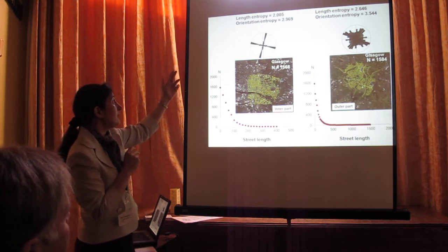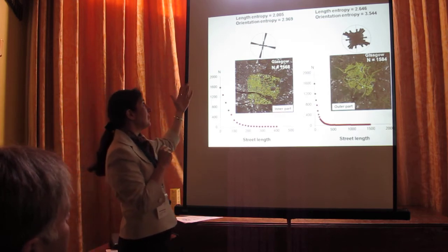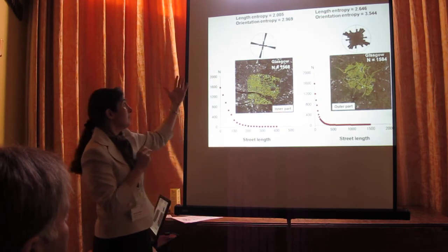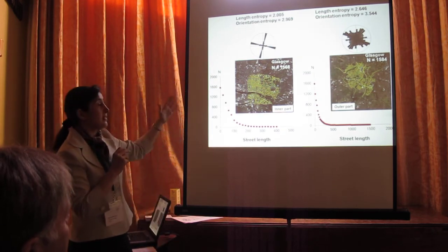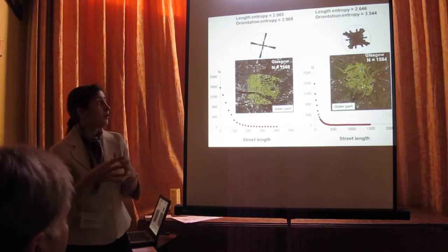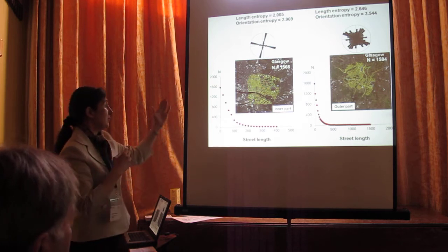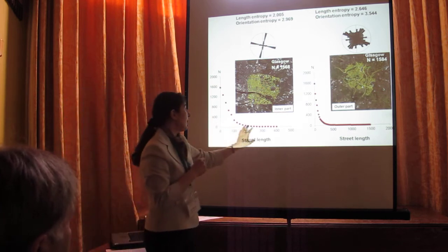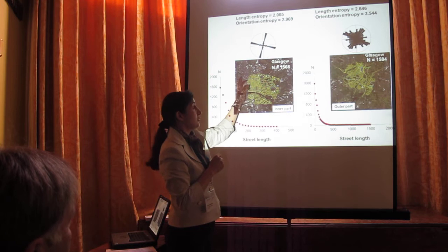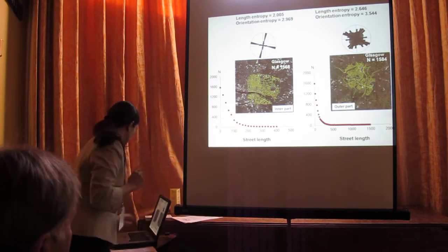When we calculate the entropy for the street length and the orientation, in both cases the inner part has lower entropy than the outer part, as seen from the limited length range and the variation of orientation in the rose diagram.